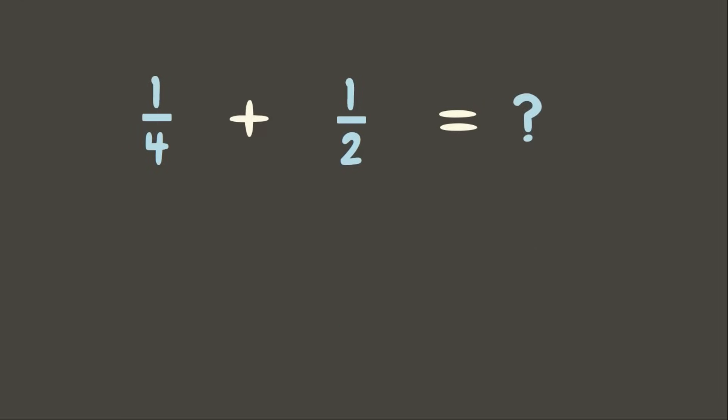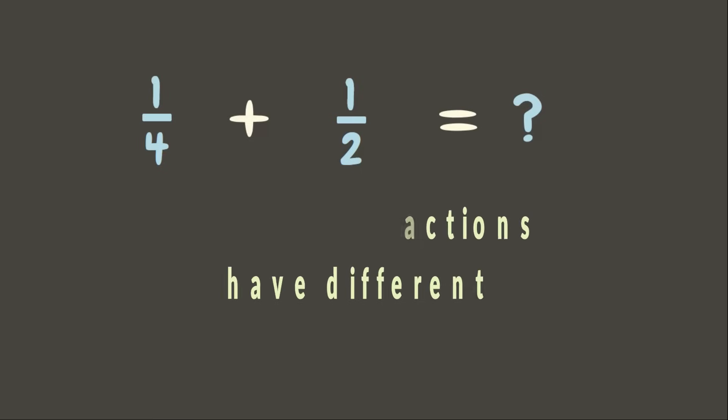Oh, look! We have our first problem. It's one-fourth plus one-half. These fractions are dissimilar fractions. Dissimilar fractions have different denominators. Now, how do we solve this one?